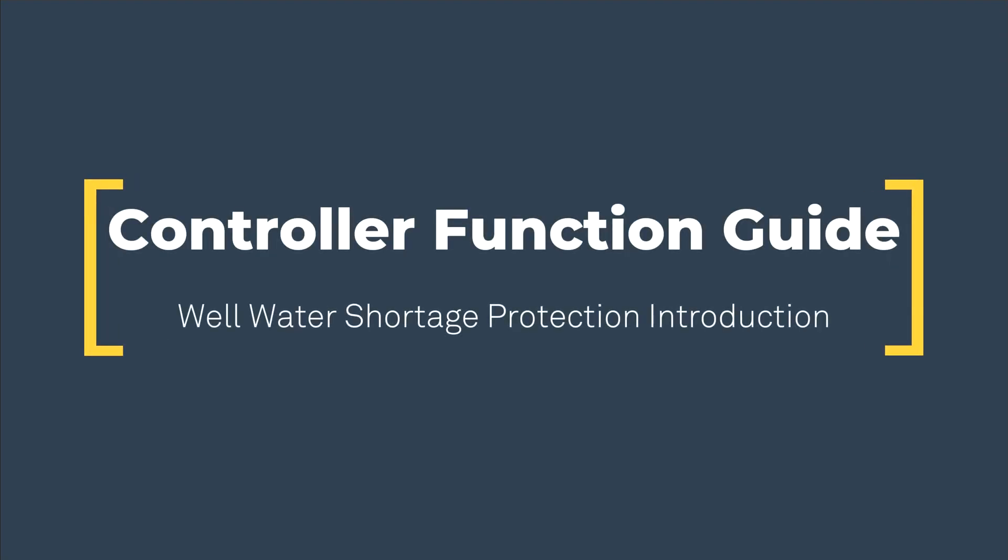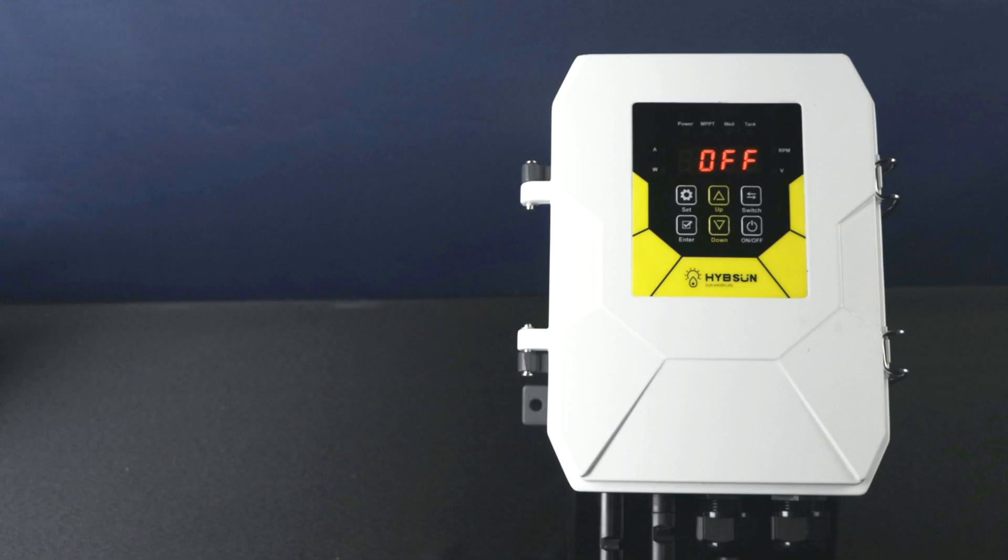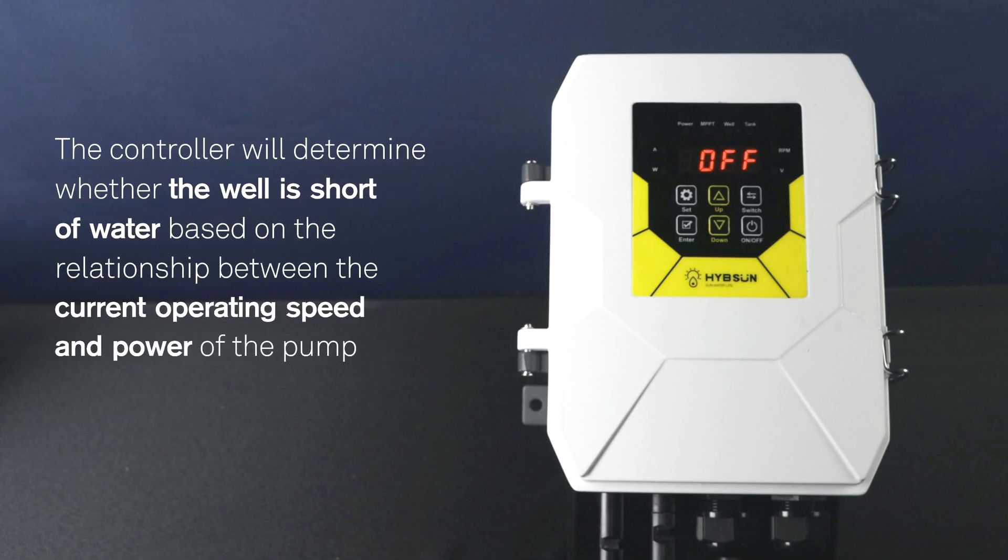Controller Function Guide: Well Water Shortage Protection Introduction. The controller will determine whether the well is short of water based on the relationship between the current operating speed and power of the pump.